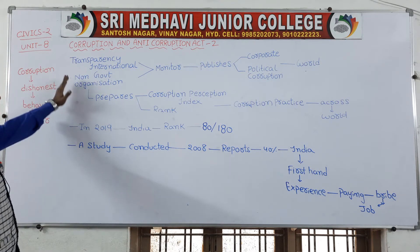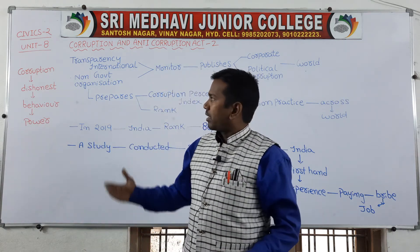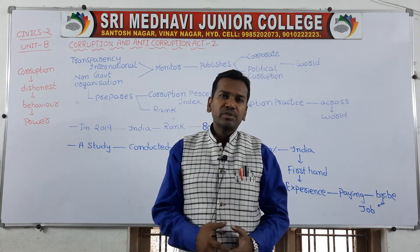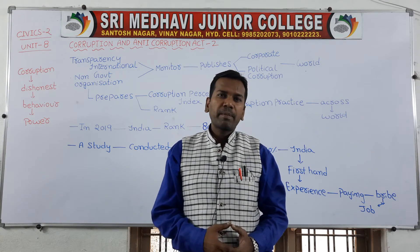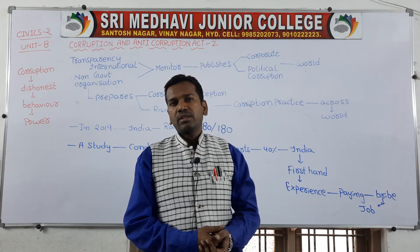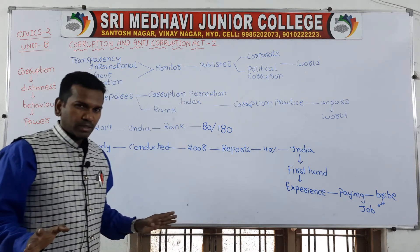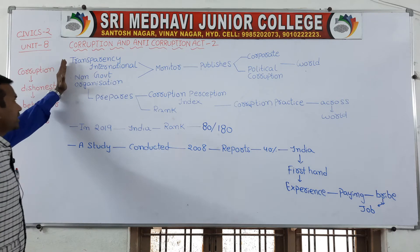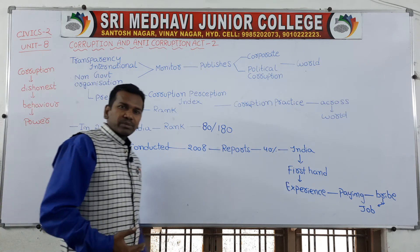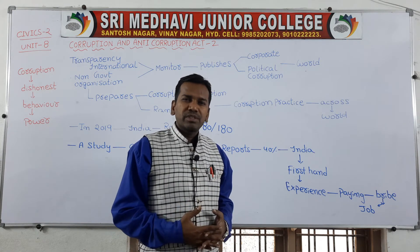To summarize, corruption is nothing but the dishonest behavior of those persons who are in power — taking bribes, gifts, money, and under-table transactions, both inside and outside the premises. All these things come under the act of corruption. Corruption has become a crime, and there are various forms of corruption that are continuously debated in the media and in public.